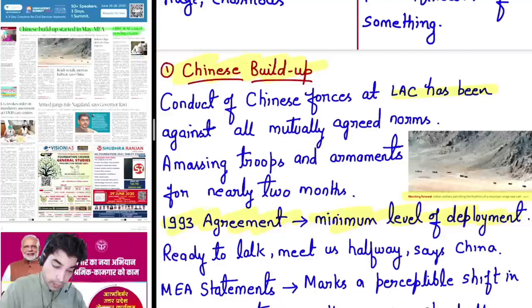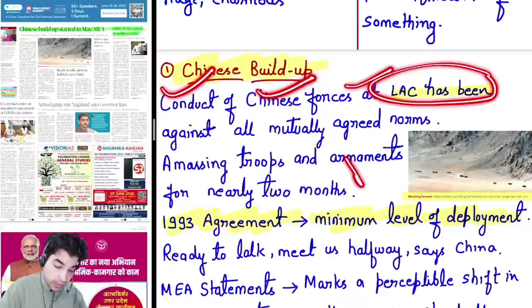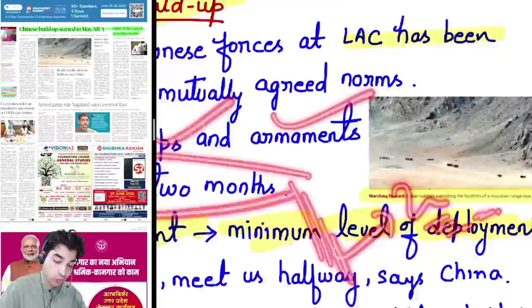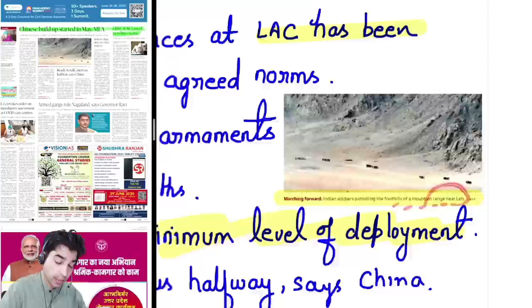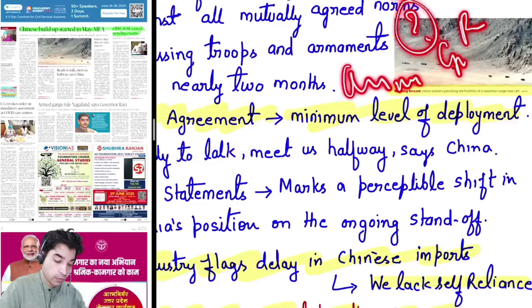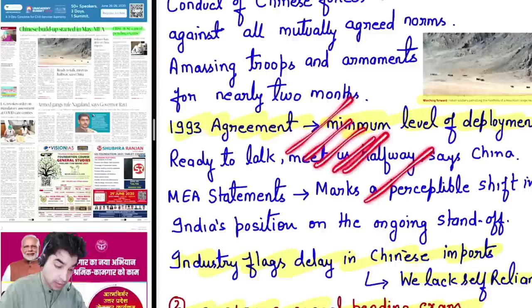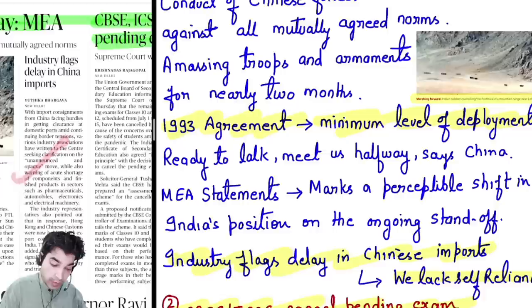First news: Chinese build-up. Chinese forces' conduct on the LAC is treacherous and against all mutually agreed norms. They have been amassing troops and armaments for nearly two months before the Galwan clash. Chinese PLA was amassing troops even as Indian patrolling happens at the foothills of the mountain range near Leh. The 1993 agreement stipulated minimum level of deployment — not too much force or logistics — but China is not following this.